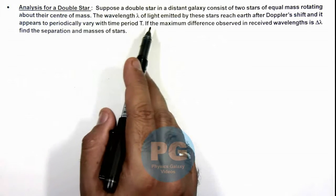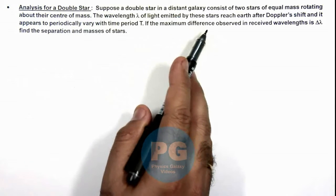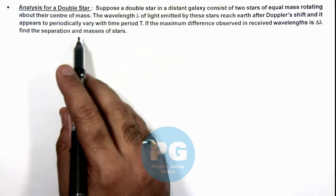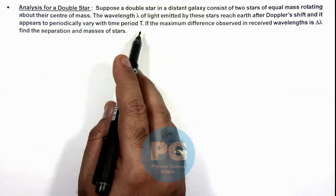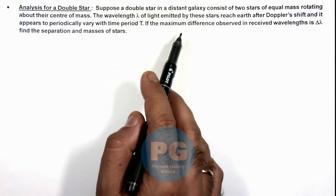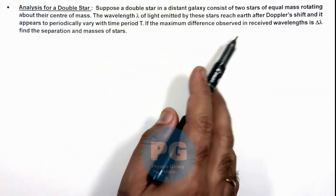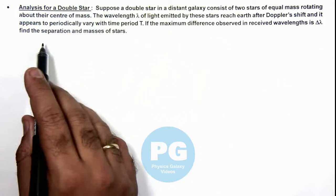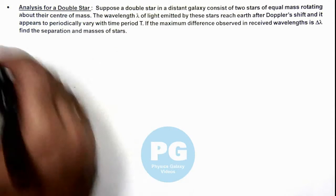The wavelength λ of light emitted by these stars reach earth after Doppler shift and it appears to periodically vary with time period T. If the maximum difference observed in received wavelengths is Δλ, we are required to find the separation and masses of these stars.